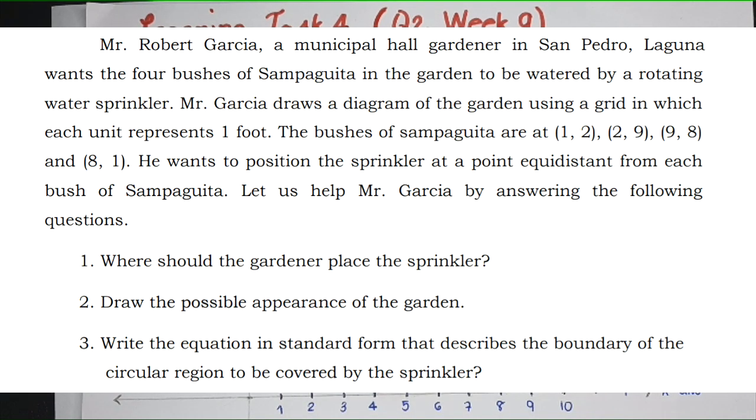This is the problem. Mr. Robert Garcia, a municipal hall gardener in San Pedro Laguna, wants the four bushes of Sampaguita in the garden to be watered by a rotating water sprinkler. Mr. Garcia draws a diagram of the garden using a grid in which each unit represents one foot.